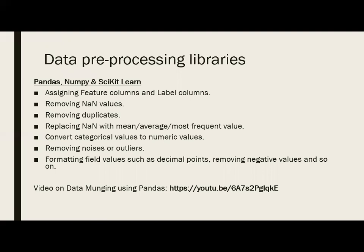General operations for data preprocessing: you may have numerous columns but need to assign some to features and some as labels. Then there is removing NaN — it is not necessary to have values in all cells or rows, so you need to remove NaN values and remove duplicates. Duplicates are not required since they have the same input and output. You can also replace NaN with the mean value, average, or most frequent value of that column — so for just one invalid value, you don't need to remove the entire row. It depends on the requirement.